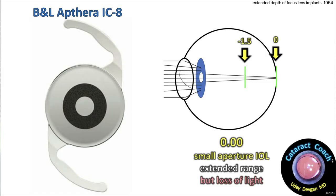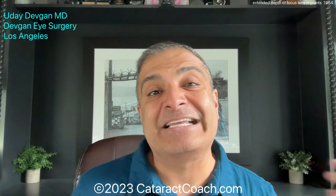We have the Bausch & Lomb Apthera IC8. This was originally developed by a company called AccuFocus, who planned on putting small donut-shaped rings inside the corneas of patients — like a LASIK flap, put the ring down, close the flap, and let it heal up, giving a wider range via the pinhole effect. It was meant for the non-dominant eye of a presbyopic patient around age 50. It worked pretty well, but some patients' corneas didn't tolerate it. So the company had a brilliant idea: put this into an intraocular lens, an IOL, where it's sequestered from the eye, the cornea is happy and untouched — and that's how the IC8 lens was born.